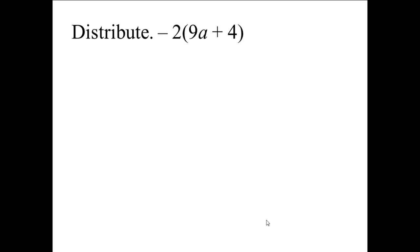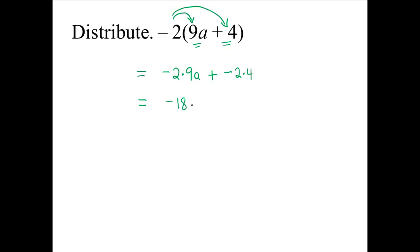We will use the distributive property mainly because inside the parentheses, 9a and 4 are not like terms — we cannot combine those together. 9a plus 4 is not 13a, for example. Using the distributive property: negative 2 times 9a, then negative 2 times 4. Negative 2 times 9a is negative 18a, plus negative 2 times 4 is negative 8. Our final answer usually does not contain plus a negative sign, so we write instead: negative 18a minus 8.